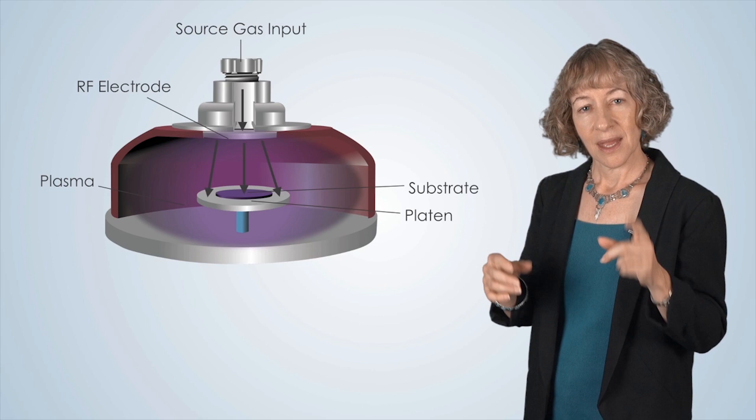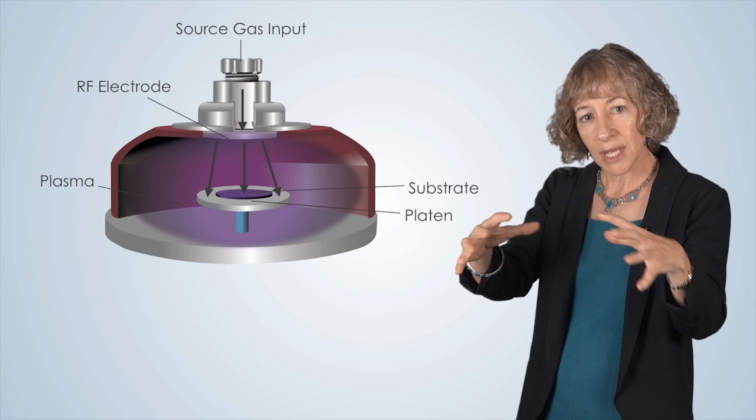PECVD uses energized atoms, this plasma, to perform a chemical reaction on the substrate's surface that deposits a thin film onto the substrate.